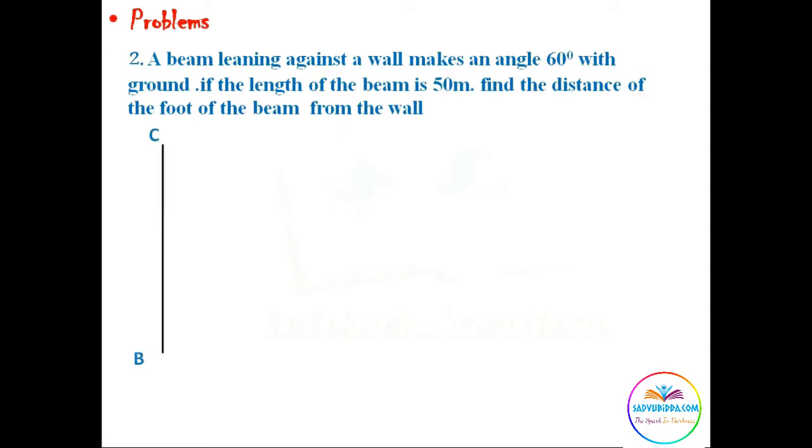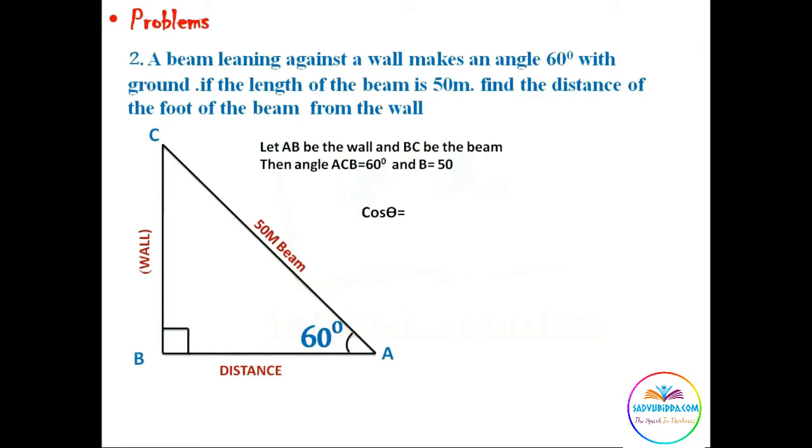Let us consider BC be a wall and AB be the distance between the foot of the beam and the wall. CA be the beam leaning against the wall, given that it is 50 meters. We have to find the distance of the beam foot from the wall. Here it is given that angle is 60 degrees. Cos theta equals adjacent side by hypotenuse side.